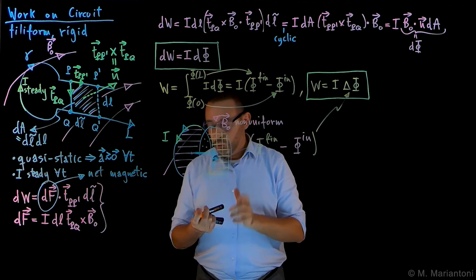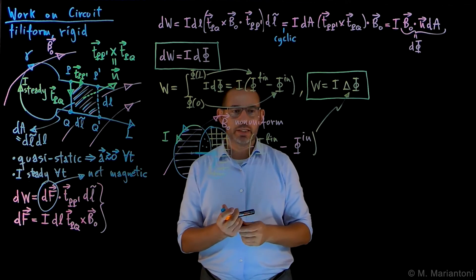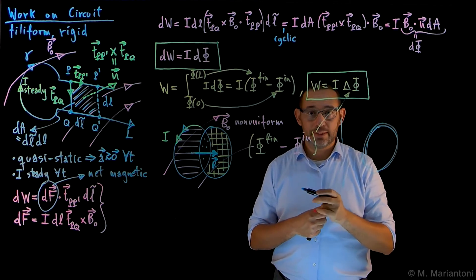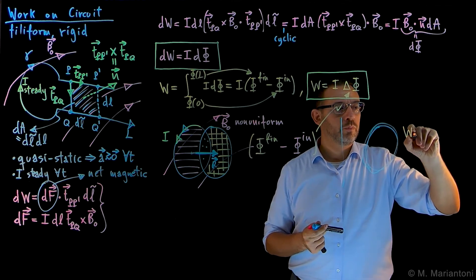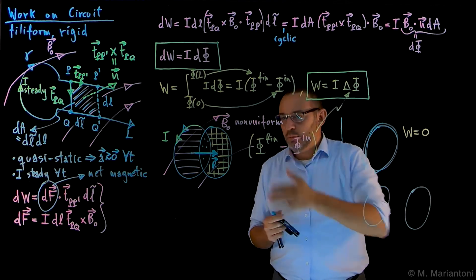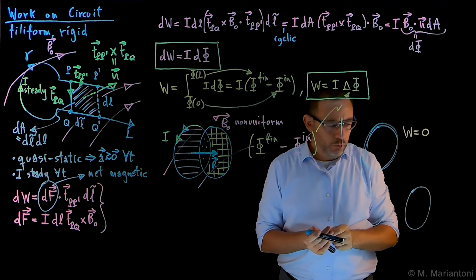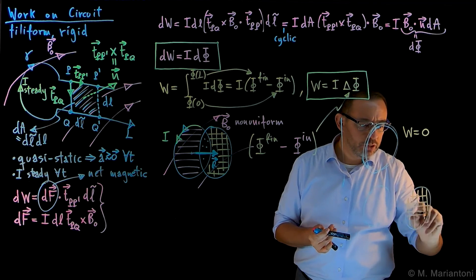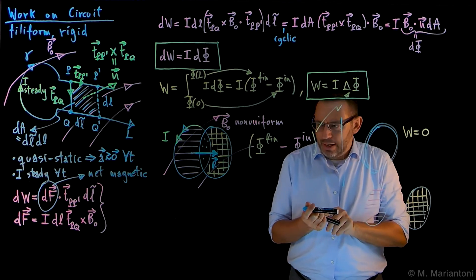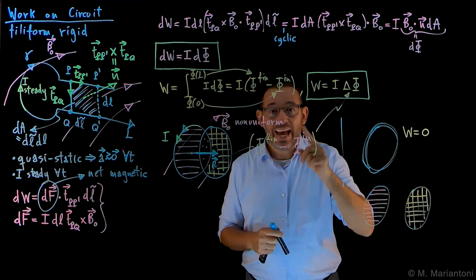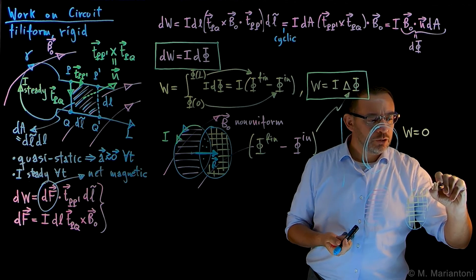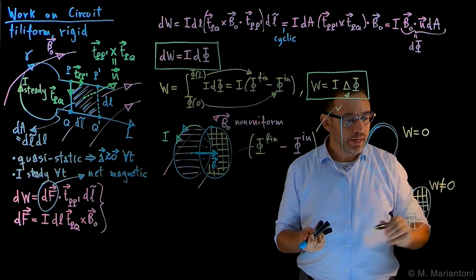Note that if I don't move the circuit, the difference of fluxes is zero, so the work is zero. More generically, if I move it from one configuration to a translated one of the same shape, I need the flux through the final loop minus the flux through the initial loop. Students often say these two fluxes are the same and get zero — but you do not get zero in general. I want you to discuss in Piazza why this is the case and why this is different from zero in general.